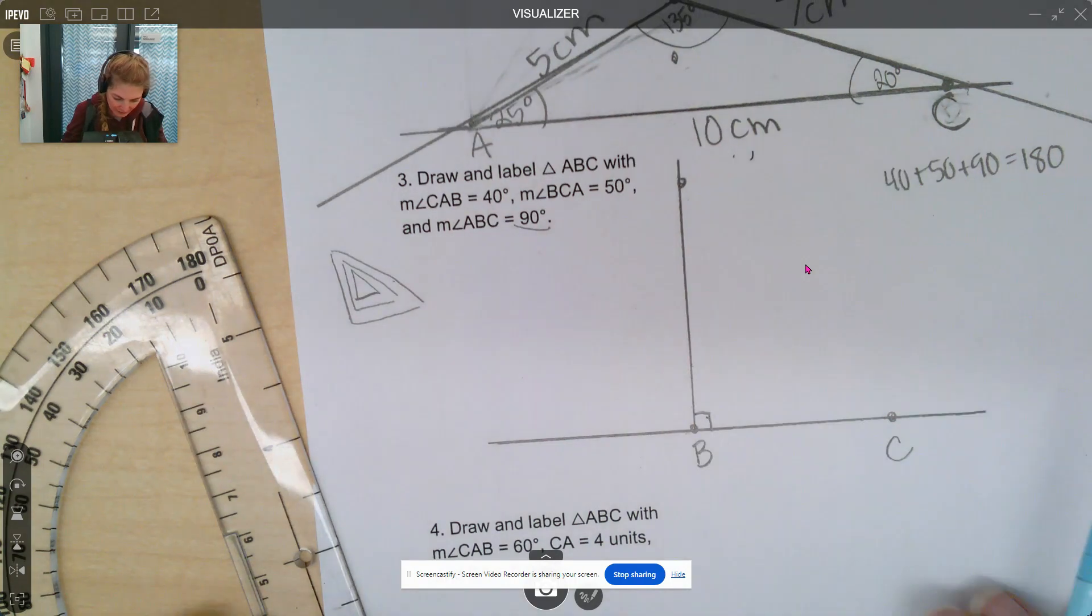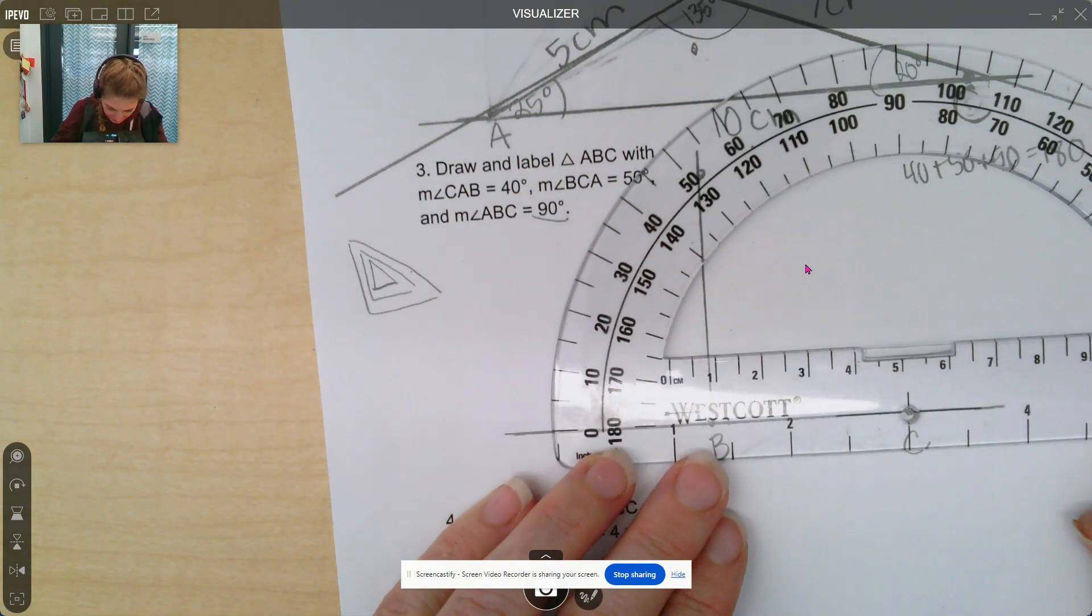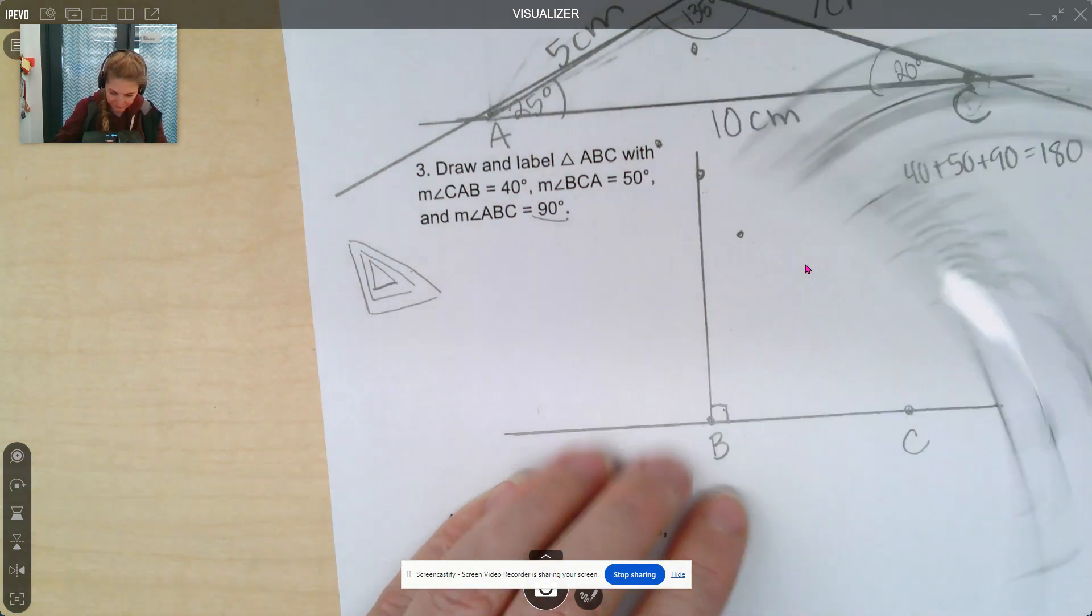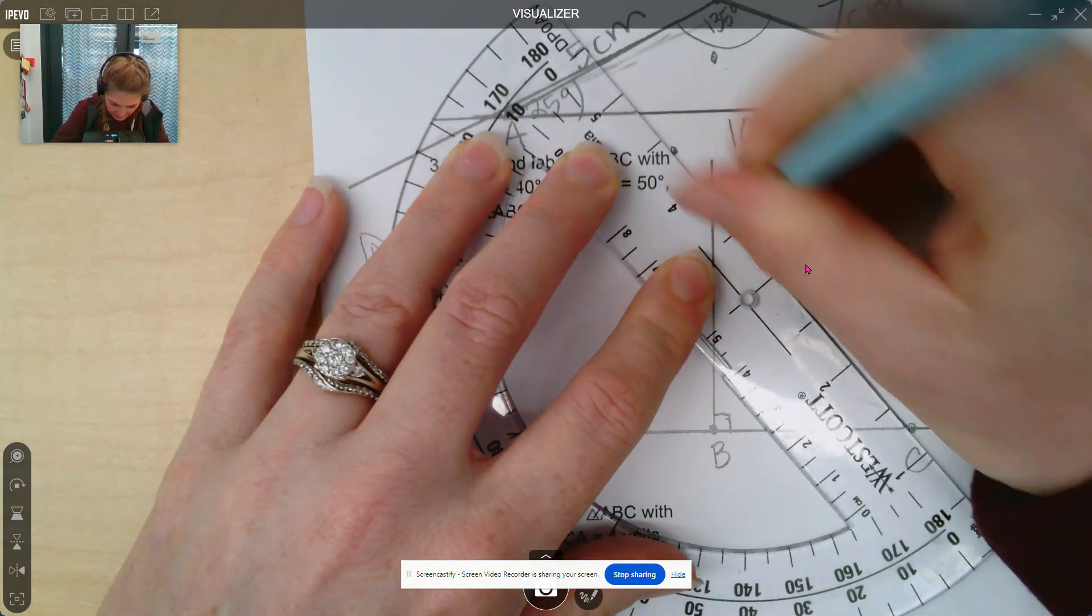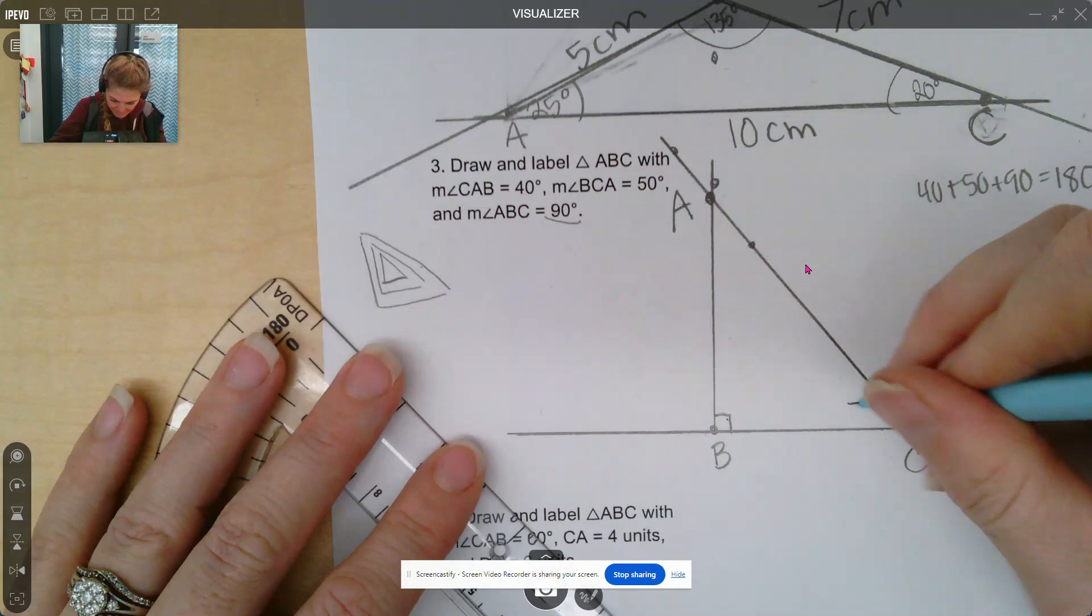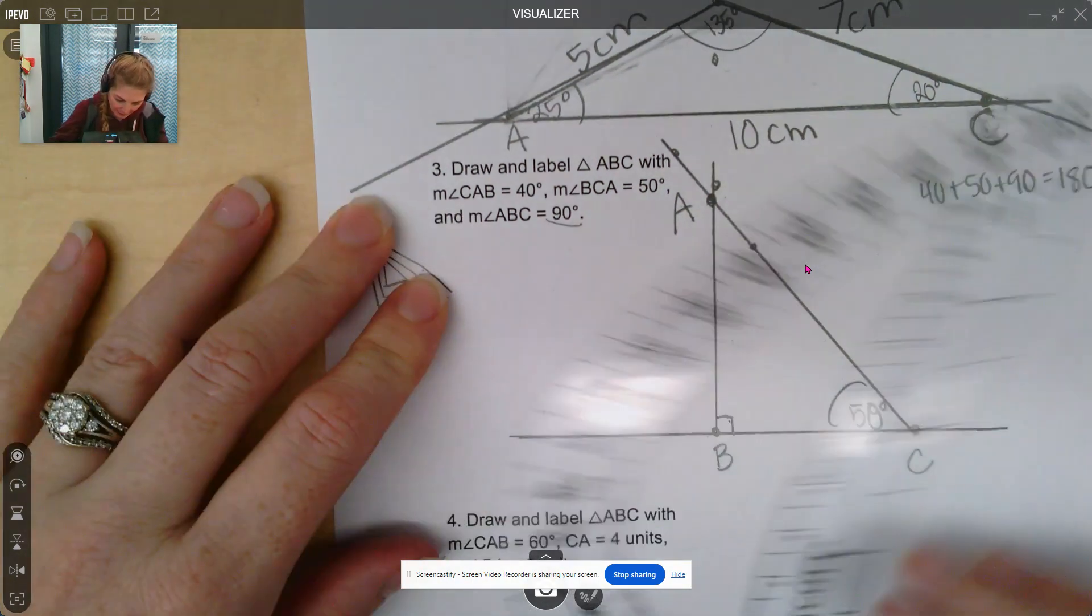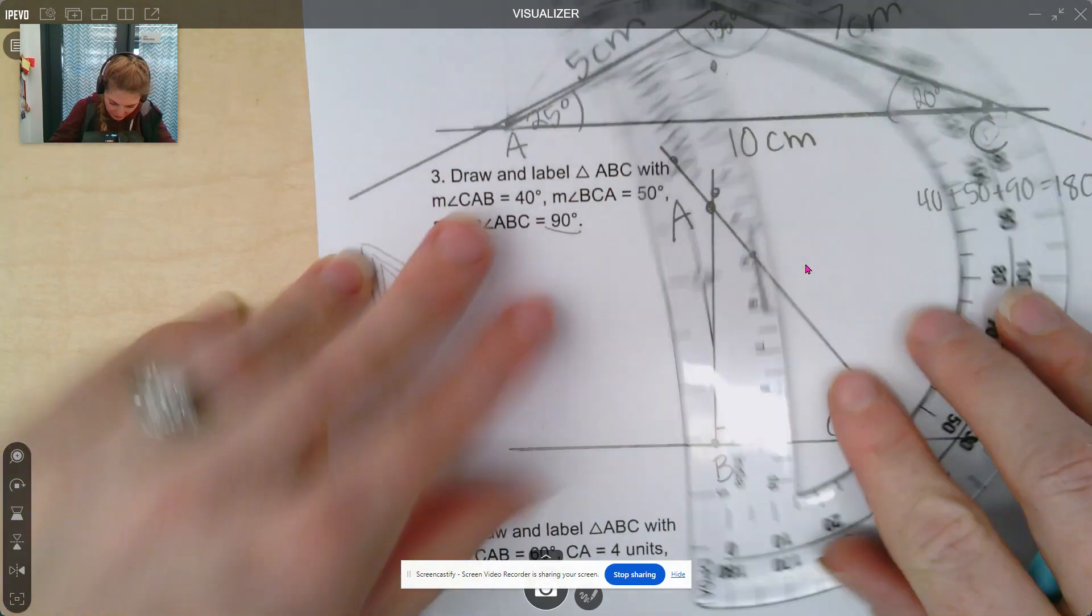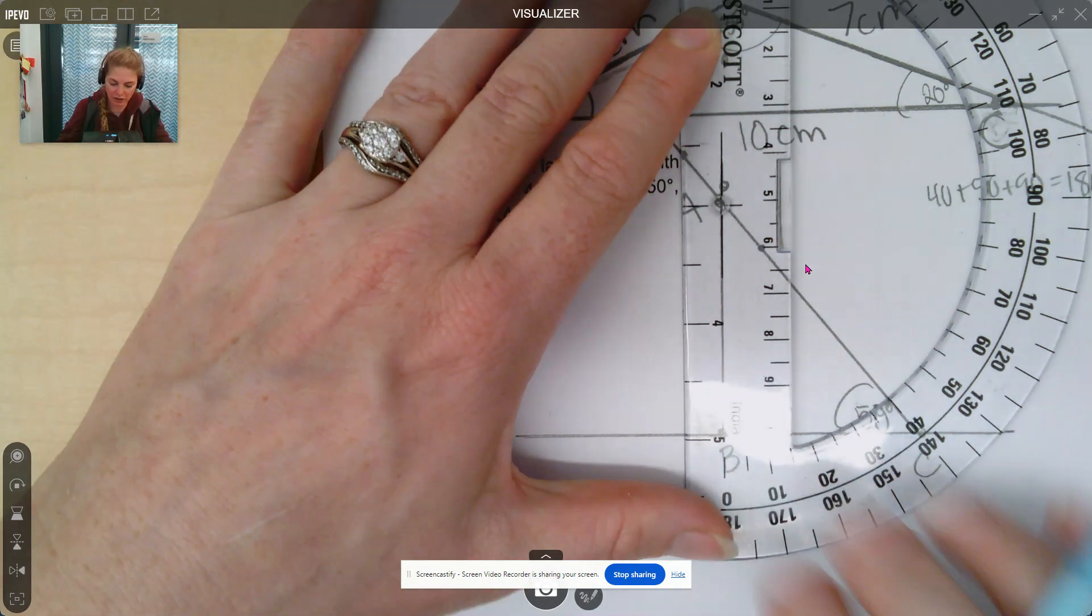And then B, C, A is going to be 50 degrees. So let's measure out 50 degrees over here. Measuring up with the zero. Coming up to 50, which will be from here to here. Lining up the three points. So this is going to be A. Oops. 50 degrees. Now, if we did this correctly, measure angle A or measure angle C, A, B should be 40 degrees. So let's check that. Lining up our zeros. And, oh, perfection, 40 degrees.